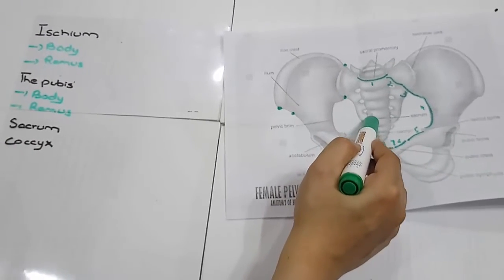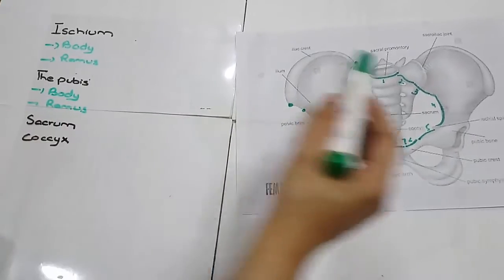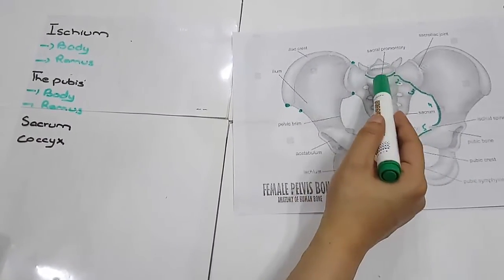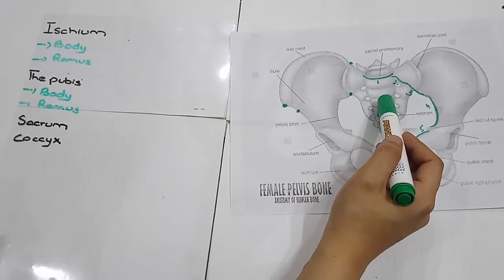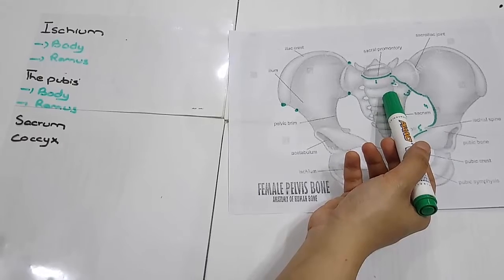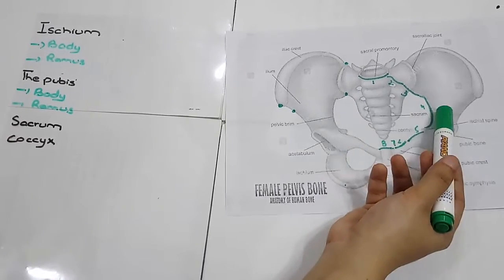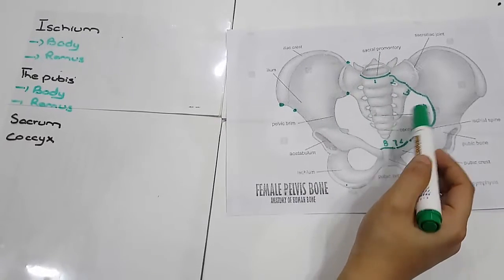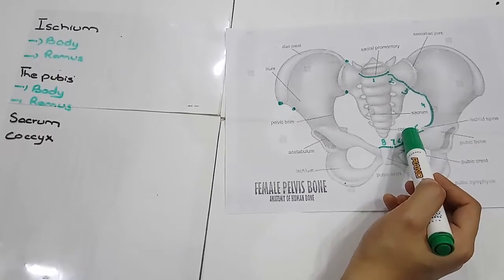The sacrum. Sacrum is basically a wedge-shaped bone. Here you could see it is a wedge-shaped bone. It comprises of five vertebrae and forms a posterior wall of the pelvic cavity, and it is wedged between the innominate bones. The caudal apex articulates with the coccyx.